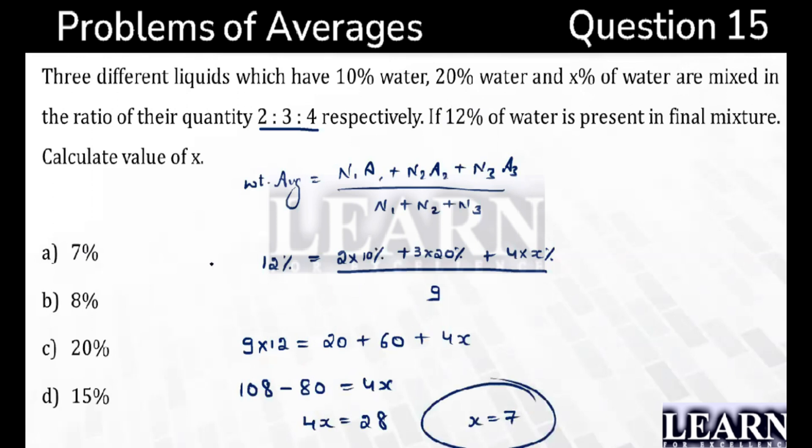And what is this X? This is nothing but the percentage. So the third quantity should have 7 percentage.